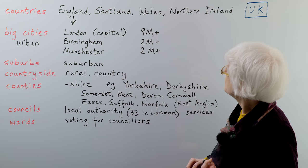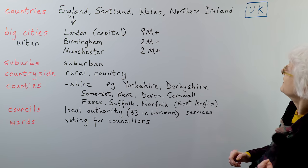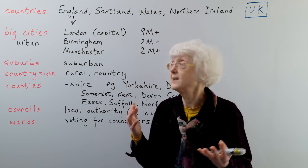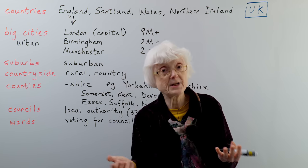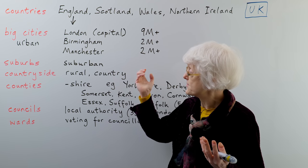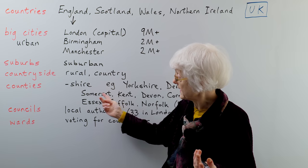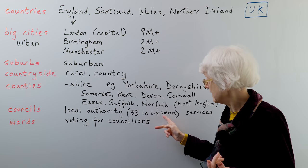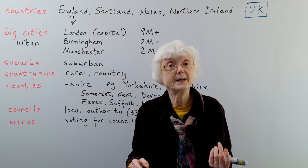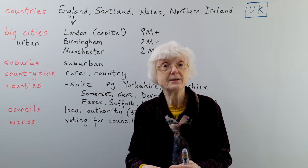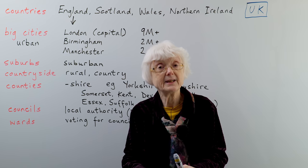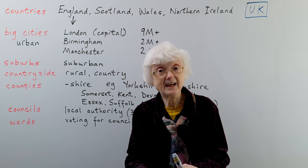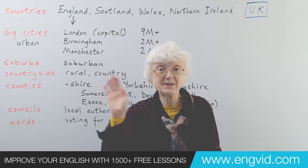I hope that's been a useful summary — just an overview, really — of how the UK is made up of four countries, and how England in particular has these big cities, different county names, and 33 councils in London. If you'd like to do a quiz on this subject, just go to the website www.engvid.com and do the quiz. Thank you for watching, and I hope to see you again soon. Bye for now.